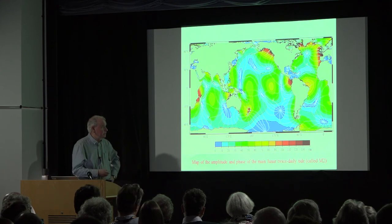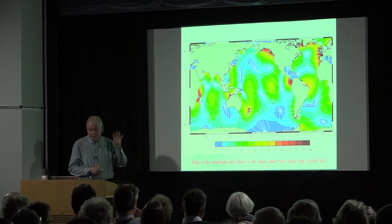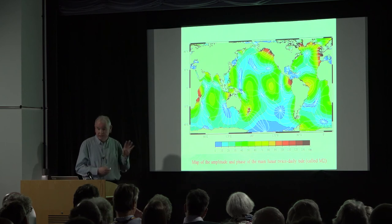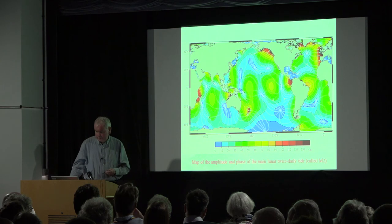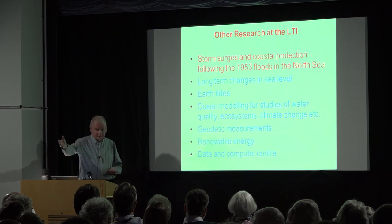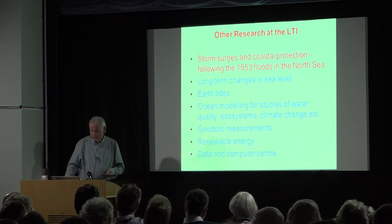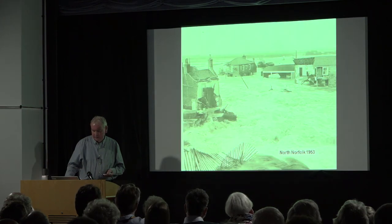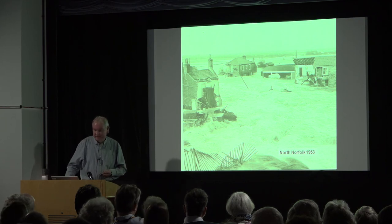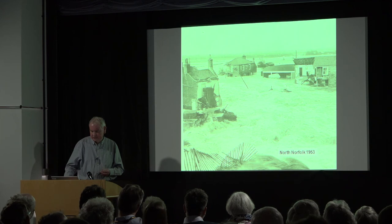This is basically a map of the main tidal component called M2. The point I'm trying to make is that we now know the tide everywhere in the world to an accuracy of about two centimetres, thanks to satellites and lots of other things. Another area the LTI worked on was storm surges — Roger Flather is here, who was a leader in that. It really took off after the 1953 floods in the North Sea, which killed about 300 people in Britain and produced funding for the next 20 or 30 years. That led to the Thames Barrier being built.